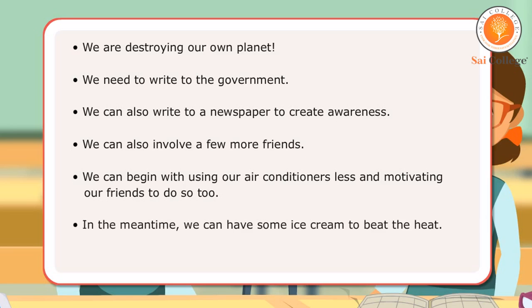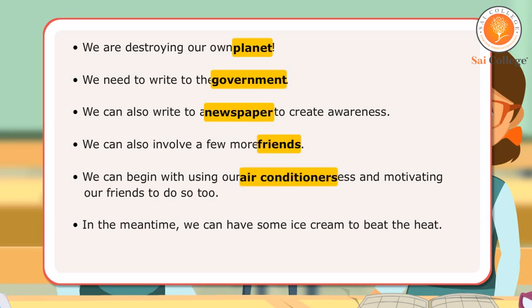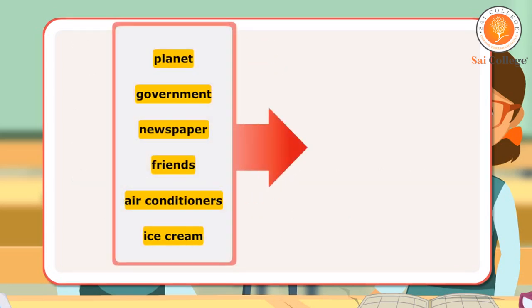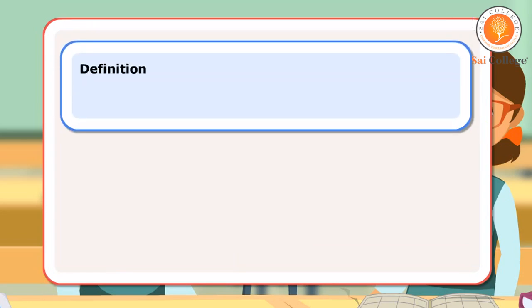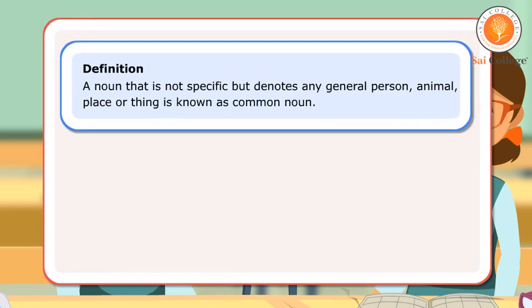The girls speak about many general things and concepts in their conversation. The words planet, government, newspaper, friends, air conditioners, and ice cream are examples of common nouns. Definition: A noun that is not specific but denotes any general person, animal, place or thing is known as a common noun.